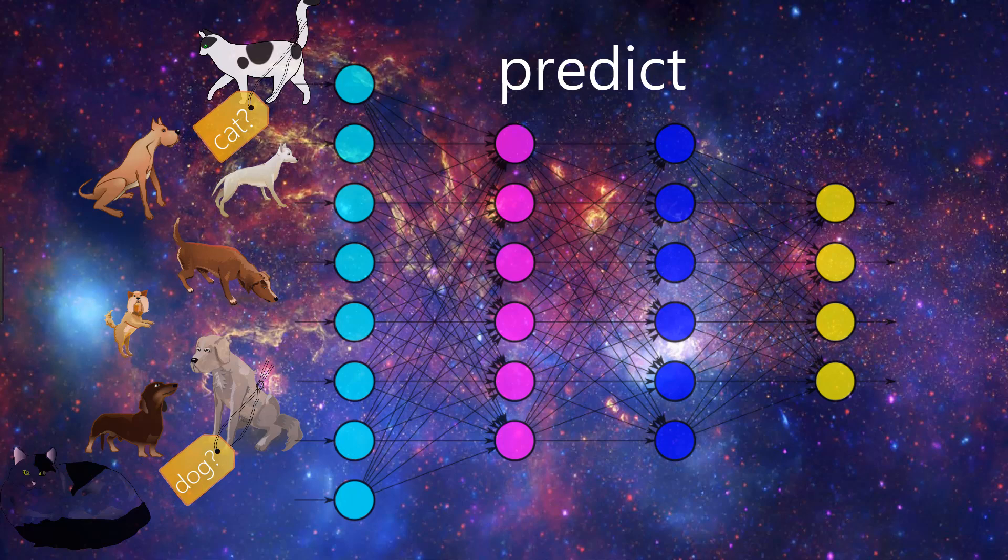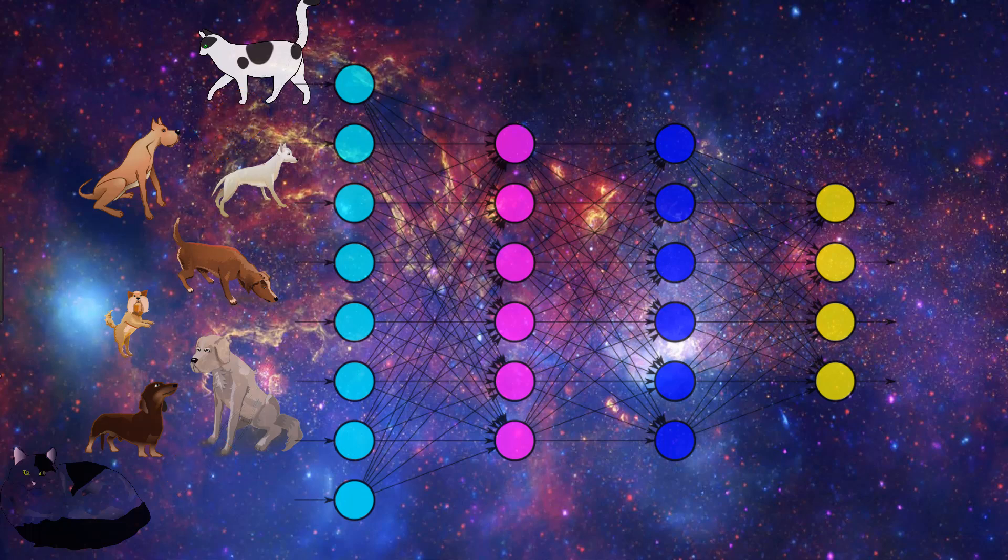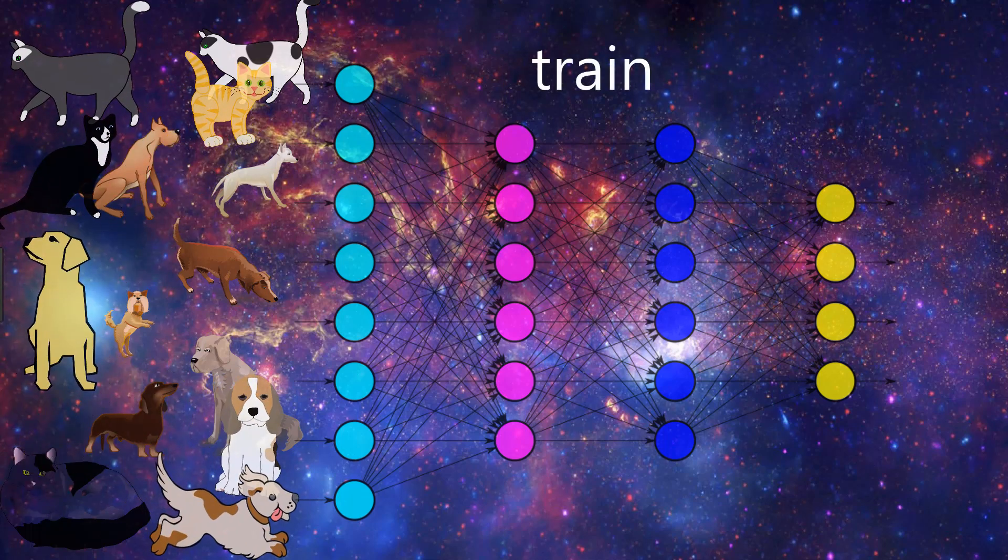This process of labeling the unlabeled data with the output that was predicted by our neural network is the very essence of pseudo-labeling. Now after labeling the unlabeled data through this pseudo-labeling process, we then train our model on the full data set, which is now comprised of both the data that was actually truly labeled, along with the data that was pseudo-labeled.